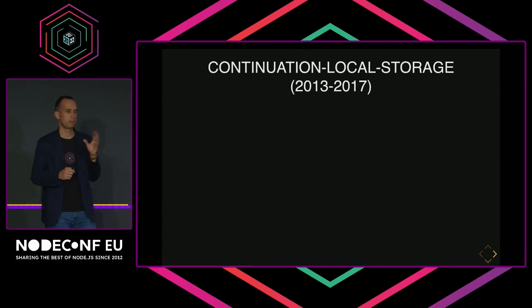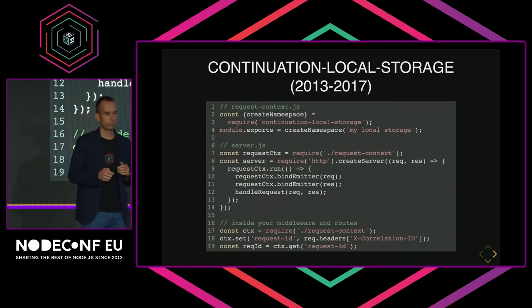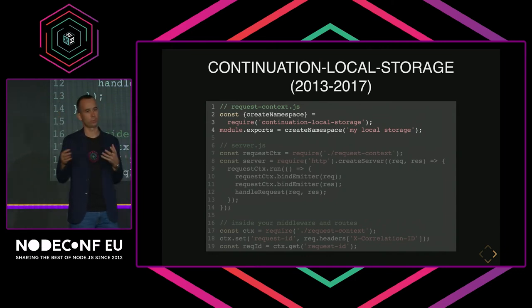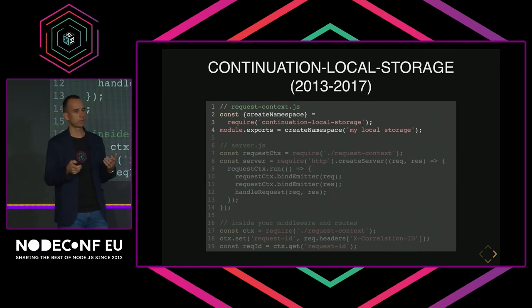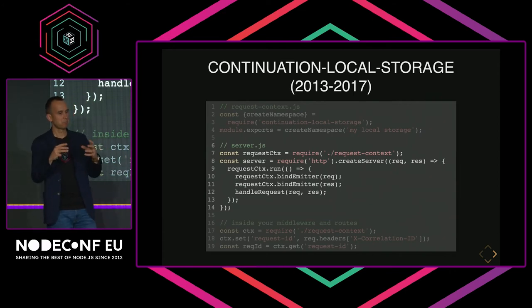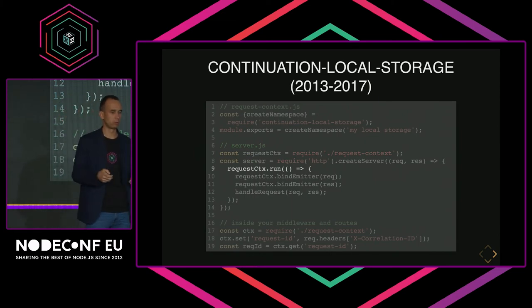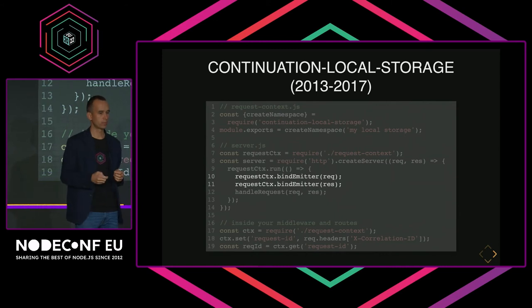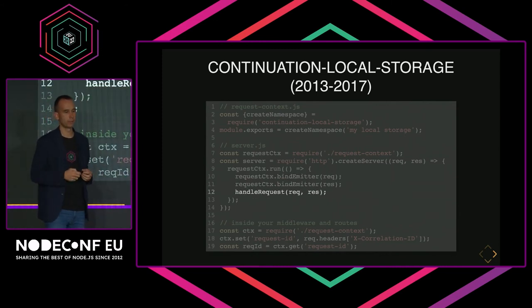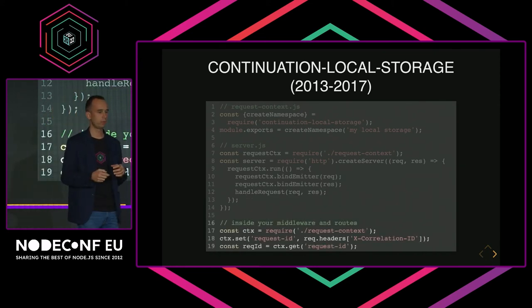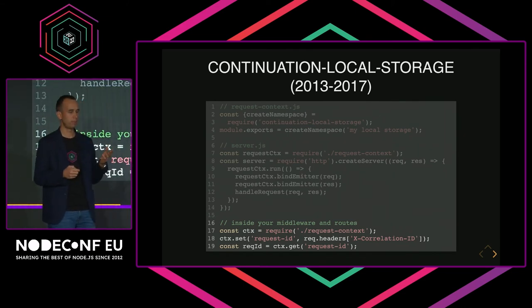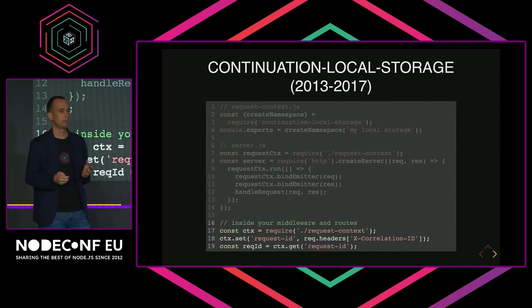Using the ideas from Domains, somebody built Continuation Local Storage, which was a userland module. It offered an API for storing and retrieving data. First, you create a namespace — this is for namespacing keys, so if you have different NPM modules each wanting to use continuation local storage, they have a safe way to have unique keys. In your server code, you run your handler inside a scope of the continuation local storage, create a new scope, and run your code as a callback. You also need to bind your request and response to the request context so that everything works. With this setup in place, everywhere else in your code you can easily access per-request data using the namespace object, with APIs similar to Map APIs — set and get values.